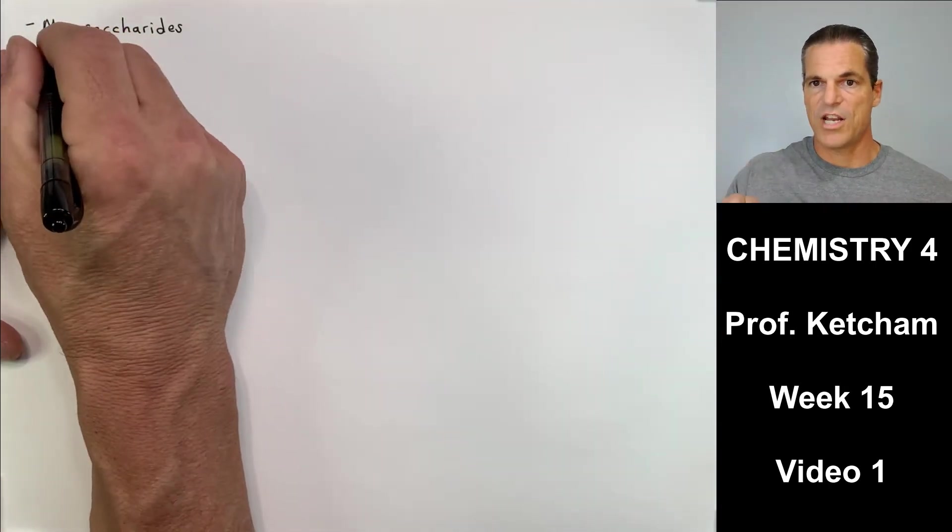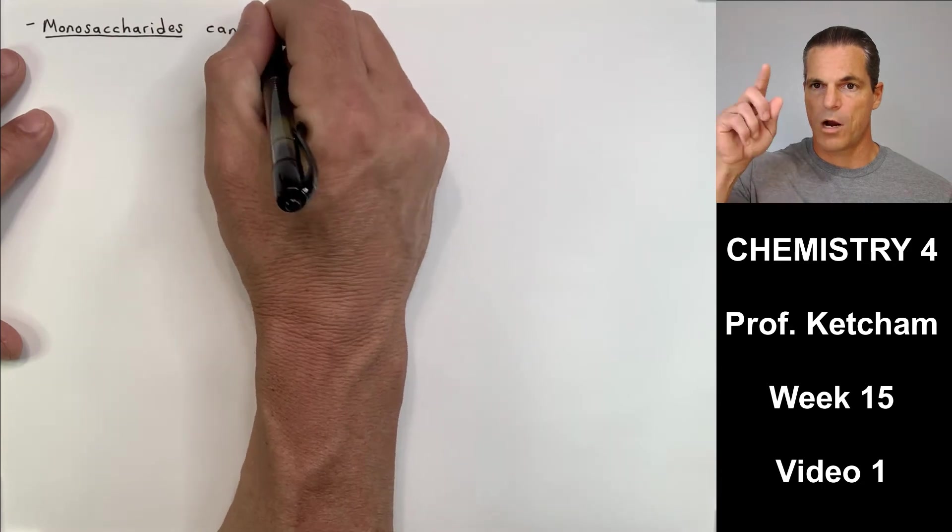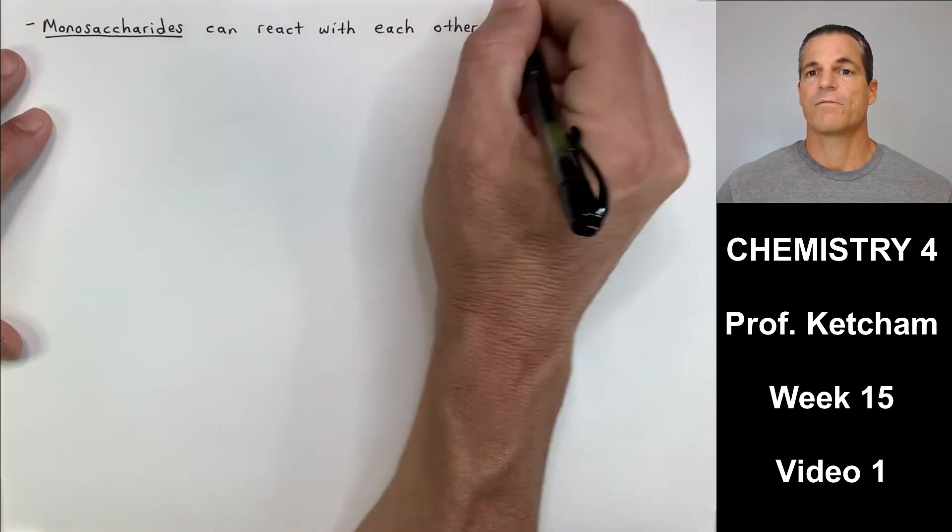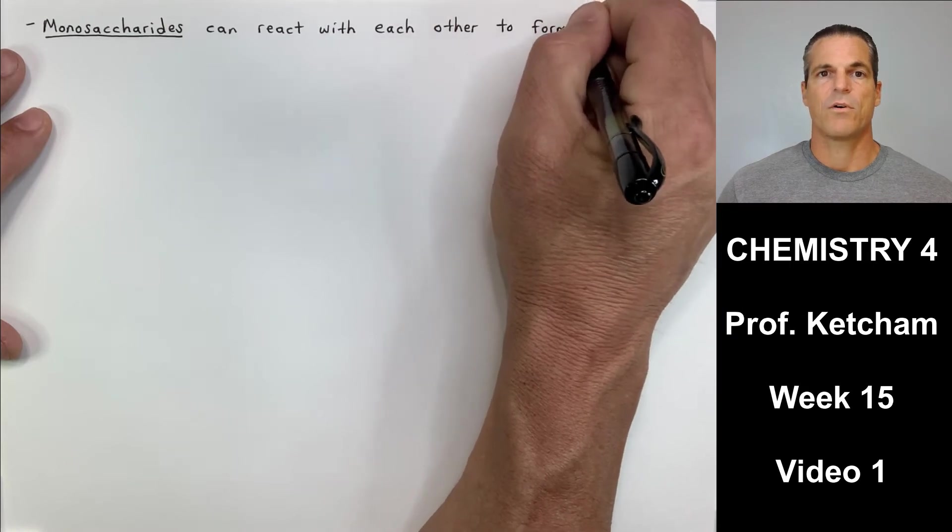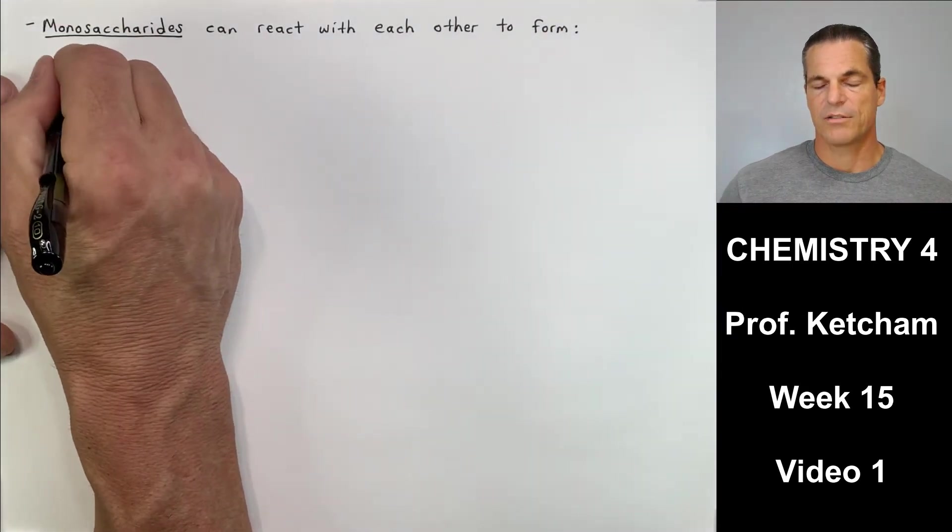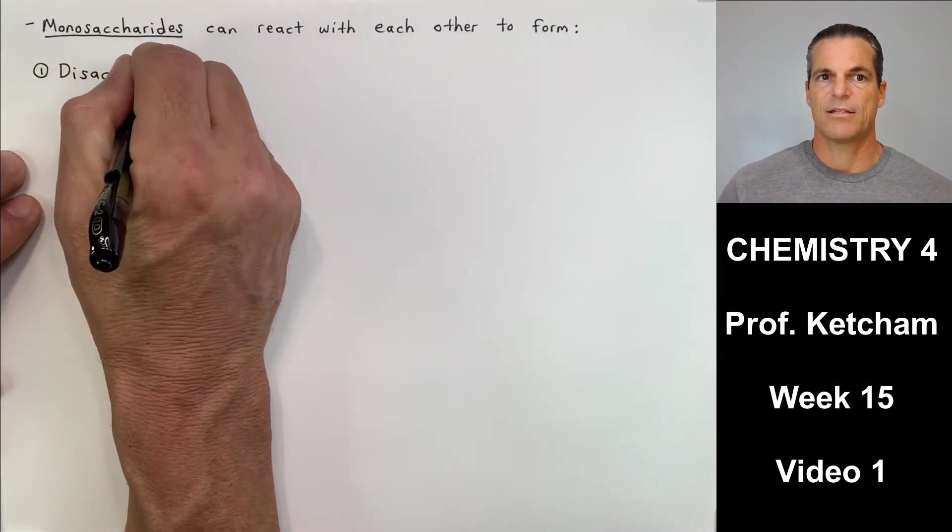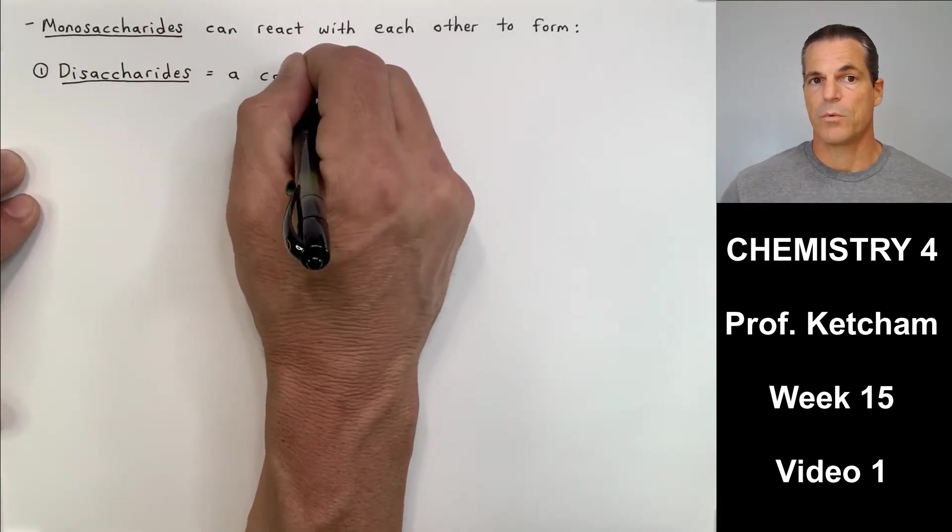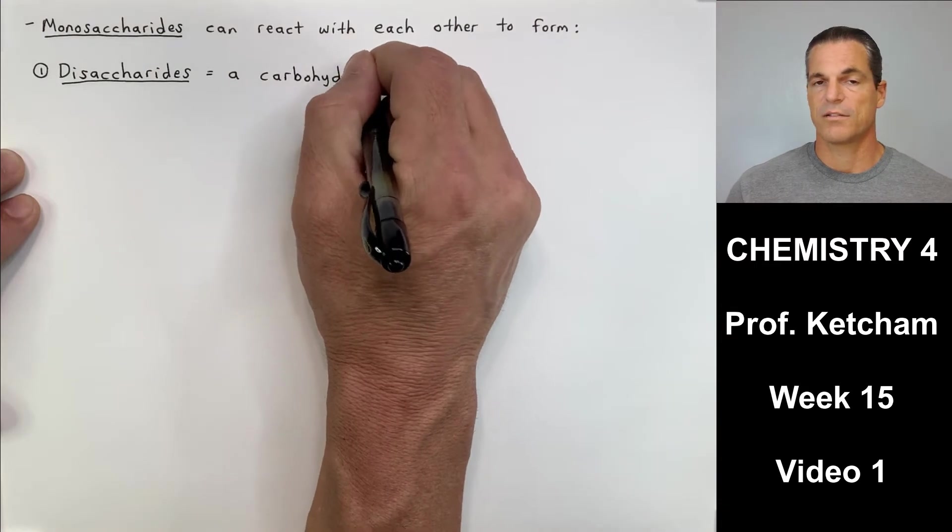Those were the straight chain drawings. You notice I put carbon one at the top, carbon six on the bottom. Those are called Fischer diagrams or Fischer projections. F-I-S-C-H-E-R. The reason why I bring that up is because when we have closed rings, they're called something else.